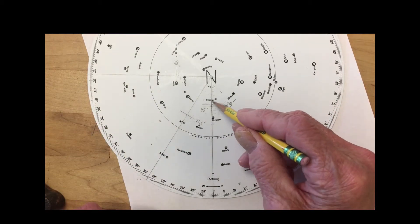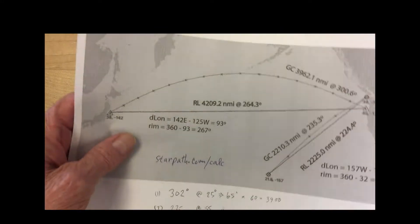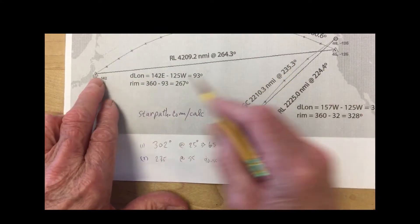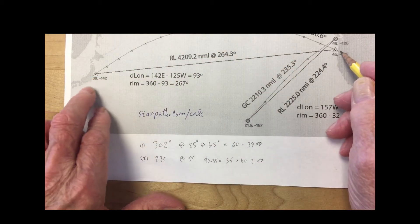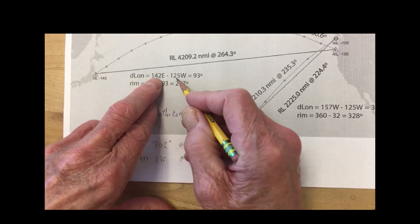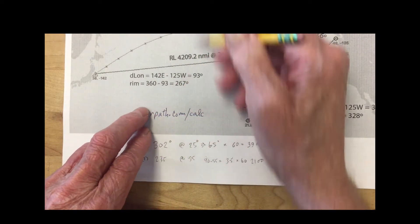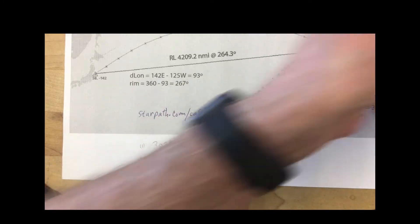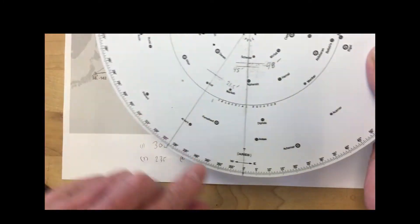And so the first thing you do is you plot your two—well, one at a time—the starting, the departure latitude here. Then you compute the difference in longitude.